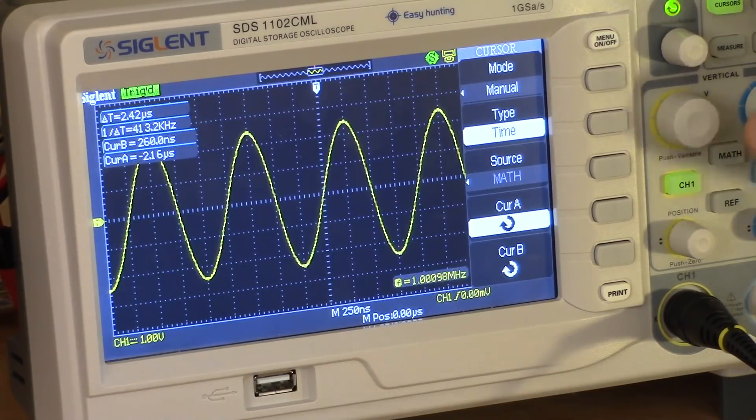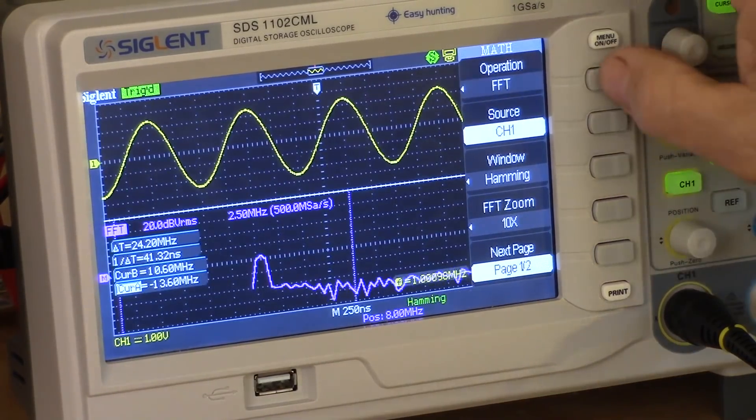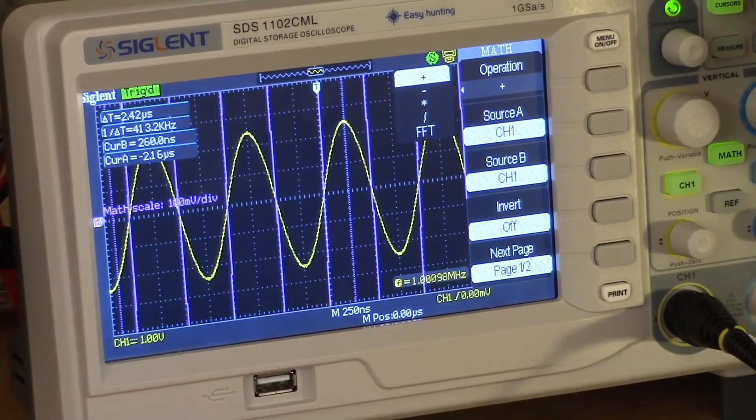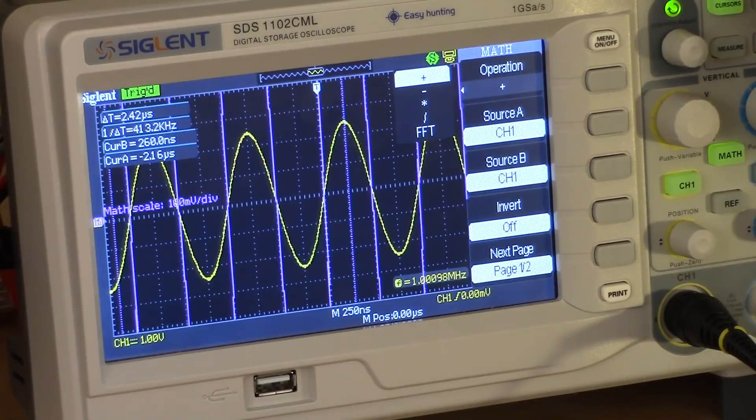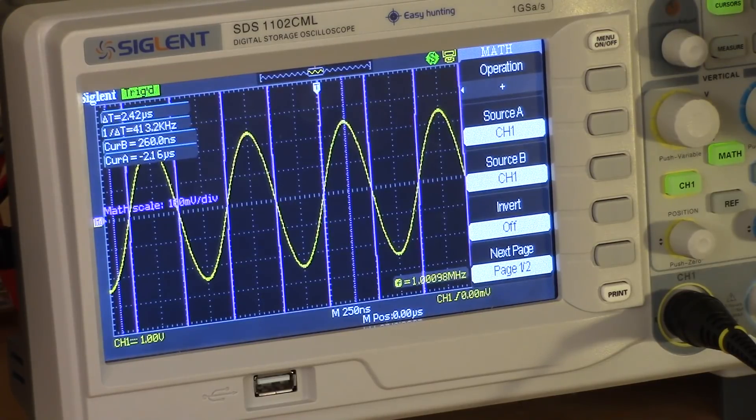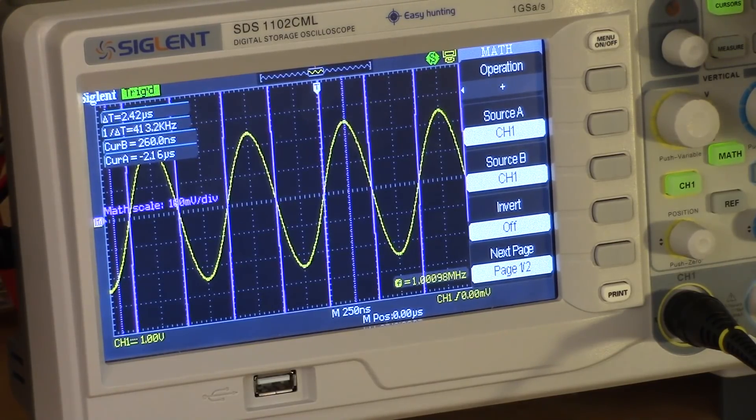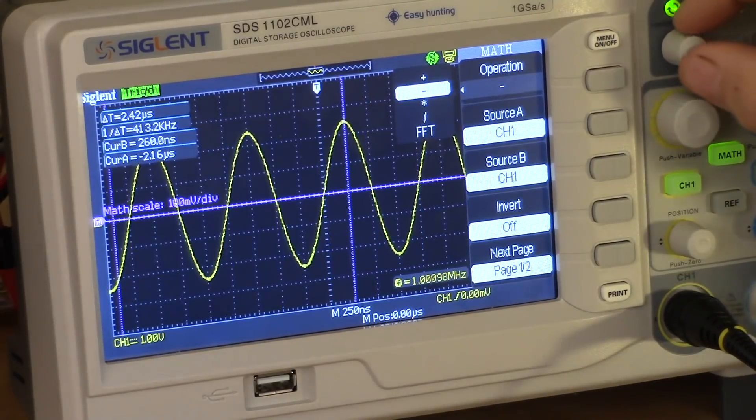And like most scopes today, it will do all kinds of mathematics. It does the basic four arithmetic operations: plus, minus, multiply, and divide. Personally, I never use these, except on rare occasion I'll use the minus operator to calculate the difference between two signals.